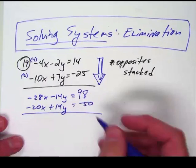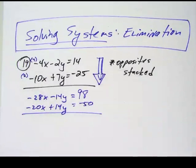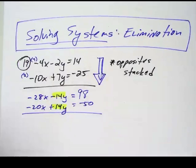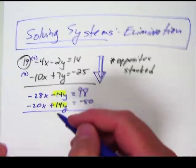Then I'm going to add going down because right here is the bingo. This is what I wanted. I've got a negative 14 over a positive 14. That's awesome because when I add these they're going to eliminate each other.